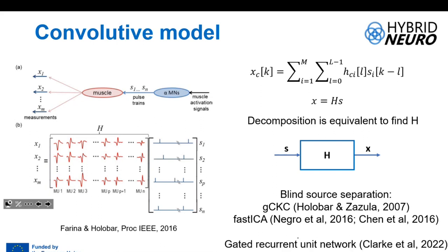It's also possible to use artificial intelligence to find the mixing matrix. Importantly, in an experiment you typically have a long signal — say 60 seconds — but if you find H in the first 20 seconds, you can use it to find the sources in the remaining 40 seconds by simply applying a matrix multiplication.